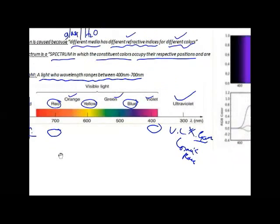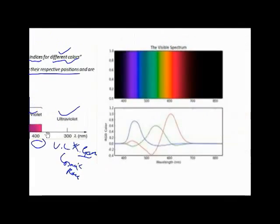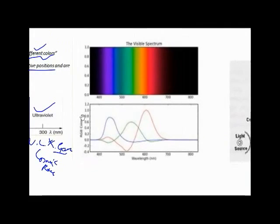The visible spectrum shows the colors — violet, indigo, blue, green, yellow, orange, and red — each occupying their respective positions and appearing distinct.